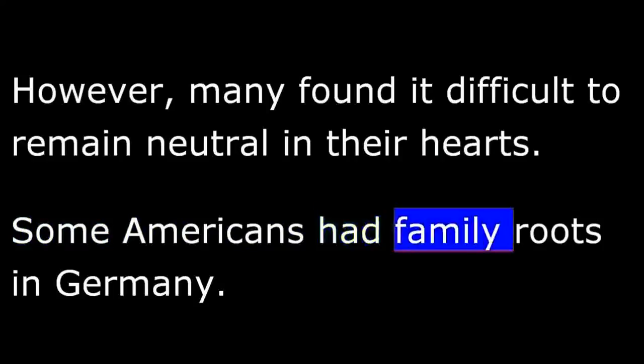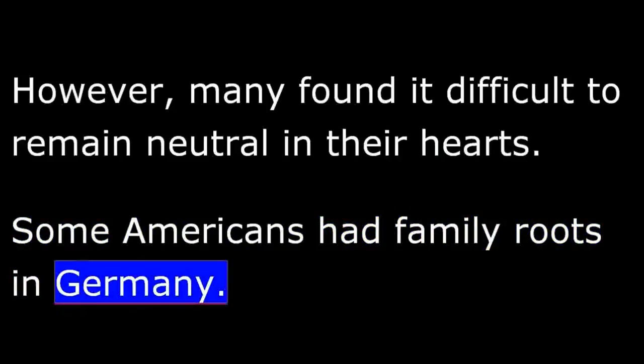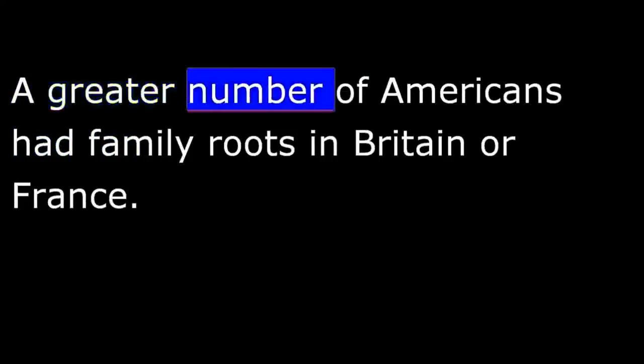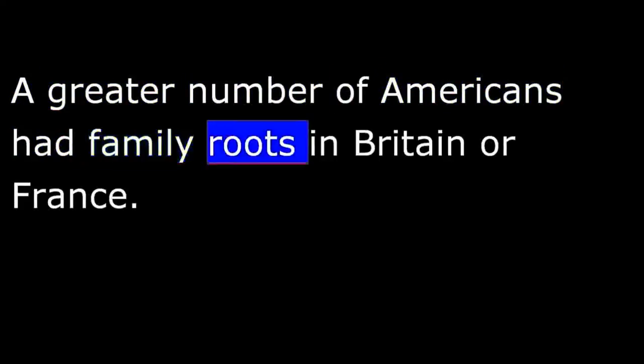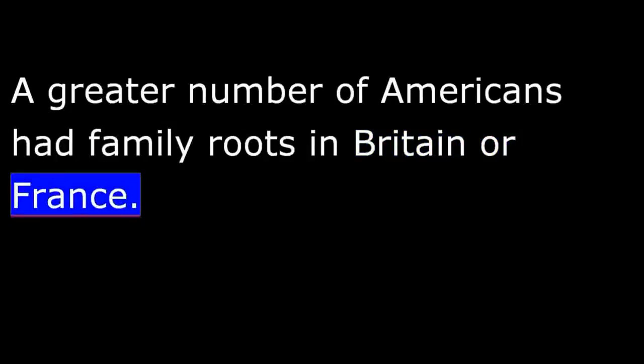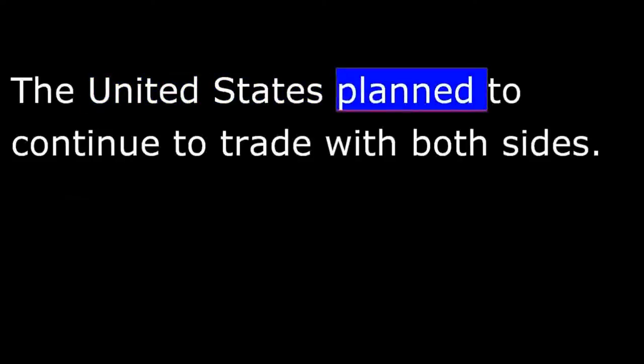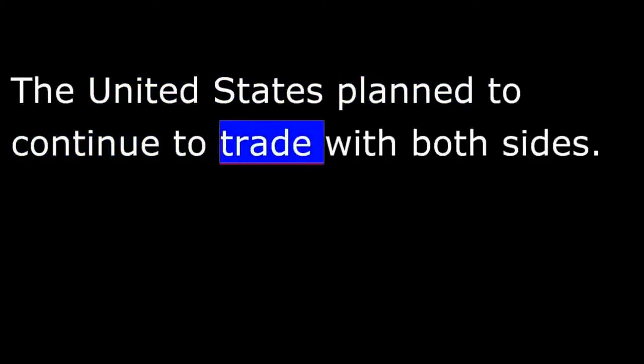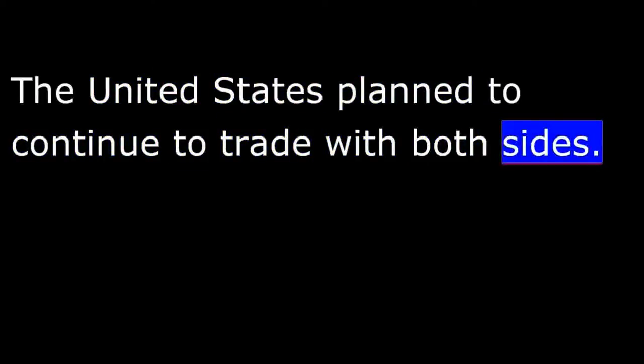Some Americans had family roots in Germany. They supported the Central Powers. A greater number of Americans had family roots in Britain or France. They supported the Allies. Yet the official American policy was neutrality. The United States planned to continue to trade with both sides.